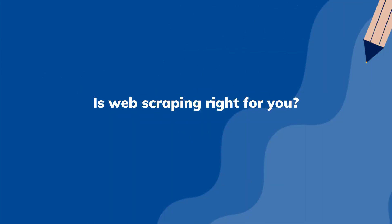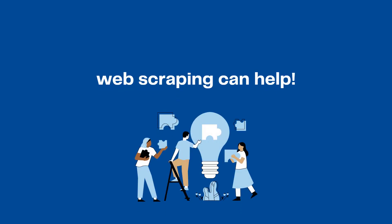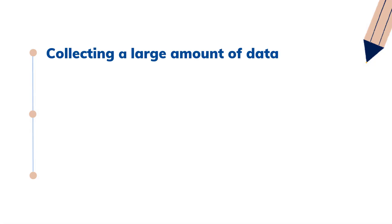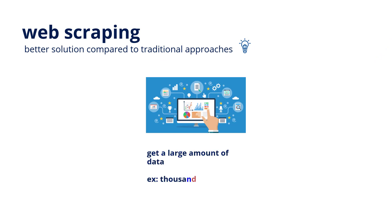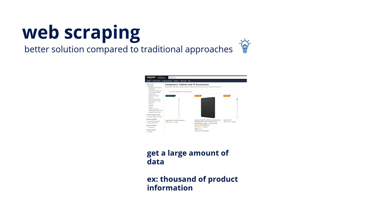Is web scraping right for you? The concept of web scraping is simple: scraping information from web pages using an automatic process like a bot. Web scraping can help you achieve your goal even when you need a very large amount of data. For example, if you want all the data on a certain website containing thousands of products, you can use web scraping to collect all the product information — that is definitely much more efficient than manually collecting it.